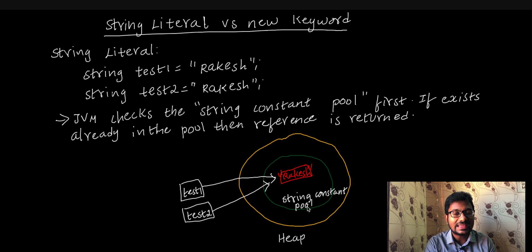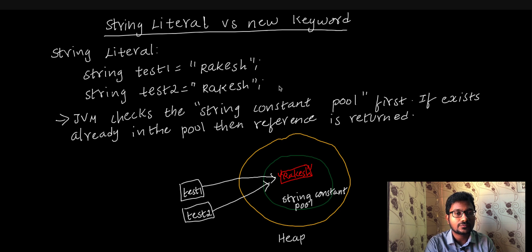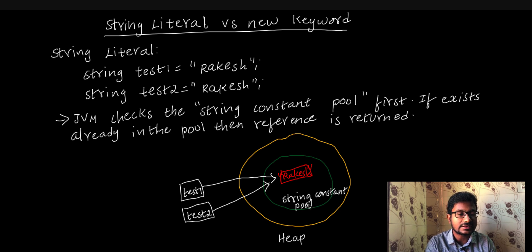In JVM, what do we do? First, we check the string constant pool. If it doesn't have the data, the first time we execute the statement, the 'Rakesh' data is stored in the heap memory in the string constant pool.